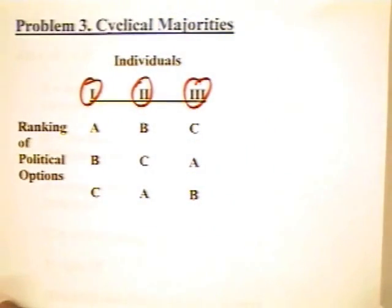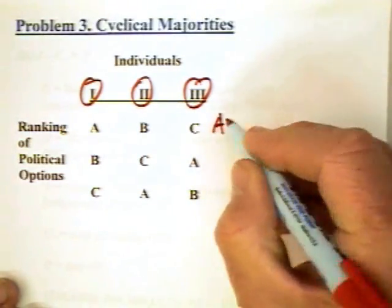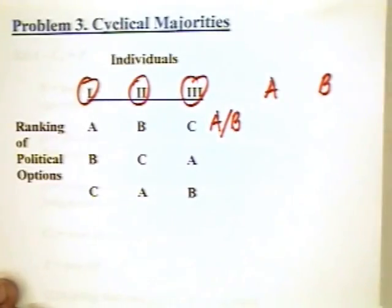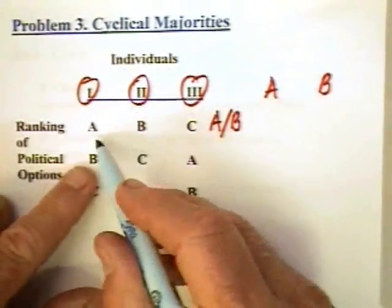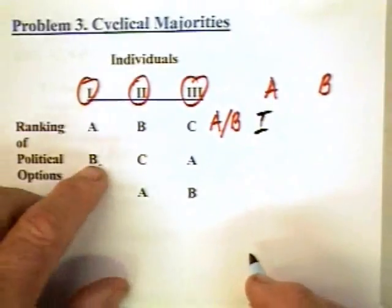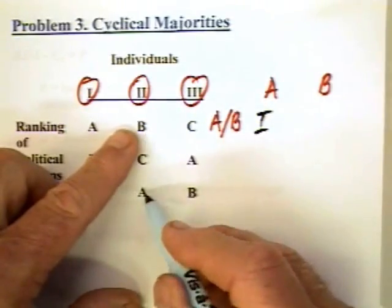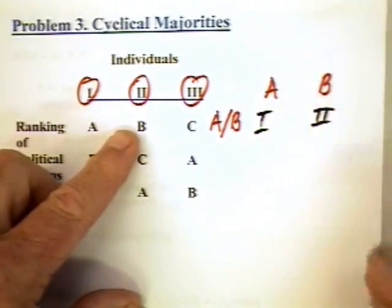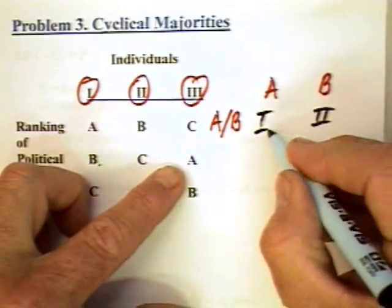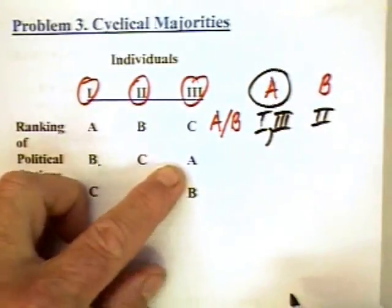Now let's put these options up in a pairwise political vote. We put option A against B and see who votes for each. Individual one would prefer A over B. Individual two would prefer B over A, since B is ranked highest and A lowest. Individual three would prefer A, since A is second and B is third. So A wins that contest.